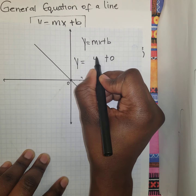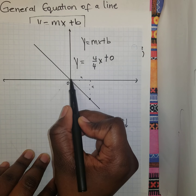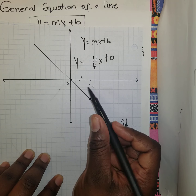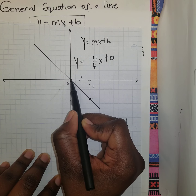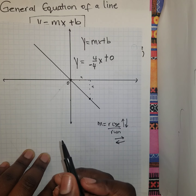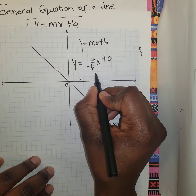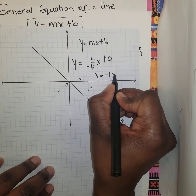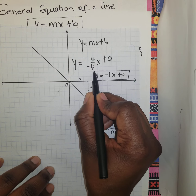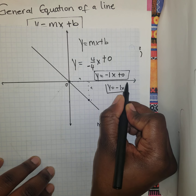So I got 4 over 4 for my m value. If you go down and then to the right, because I went 4 in the negative direction, the run is going to be negative 4, giving negative 4 over negative 4, which simplifies to 1. So y equals negative 1x plus 0, or just y equals negative x.